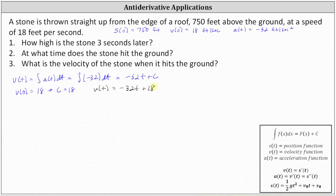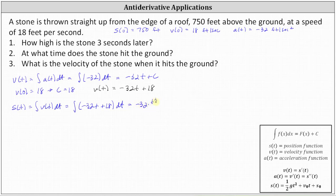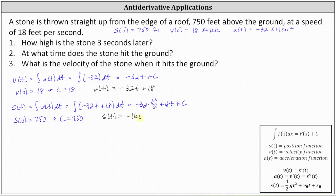Now that we have the velocity function, we can integrate it to recover the position function. s of t equals the integral of v of t dt, which equals the integral of negative 32t plus 18 dt, which equals negative 32 times t squared divided by 2, plus 18t plus C. Because we know the initial height is 750 feet, s of zero equals 750, so when t is zero the height must be 750, meaning the constant C equals 750. Therefore the position function s of t equals negative 16t squared plus 18t plus 750.